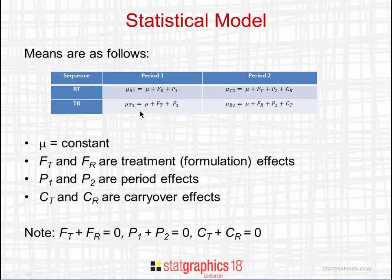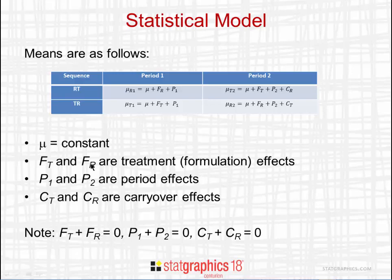For the animals in the second sequence, the mean in period 1 is a constant plus an effect due to the test treatment plus an effect of period 1. The mean in the second period is a constant plus an effect of the reference treatment, plus an effect of period 2, plus a carryover effect due to receiving the test treatment before the reference treatment. Our primary interest is in the treatment or formulation effects. The period effects and carryover effects are nuisance effects.